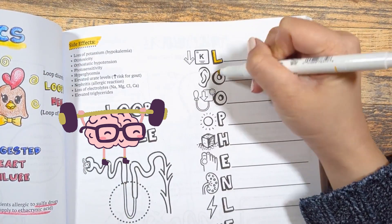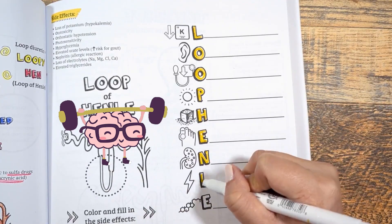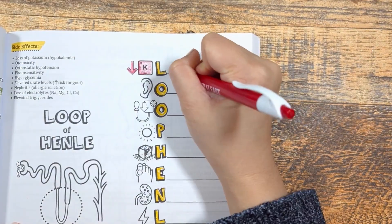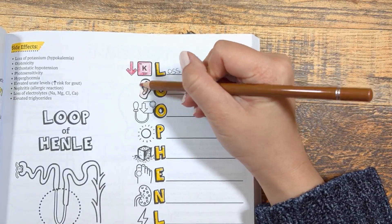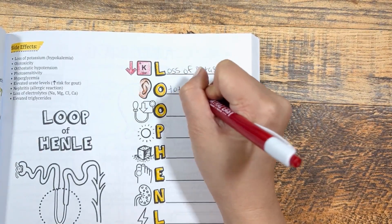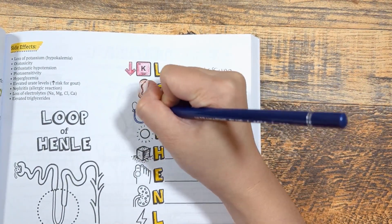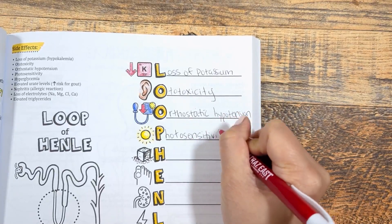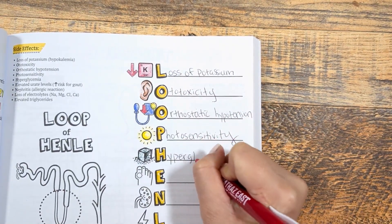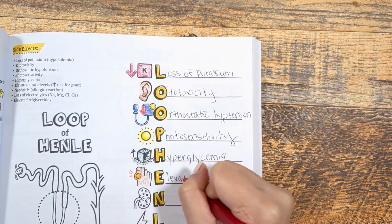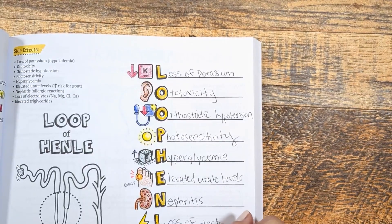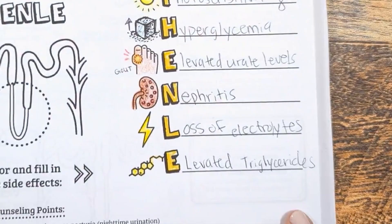Now for side effects — remember the mnemonic LOOP OF HENLE, specifically the thick ascending loop of Henle. L is for loss of potassium; patients may be prescribed potassium supplements when taking high doses. O is for ototoxicity, especially at high doses or if co-administered with other ototoxic agents. O is also for orthostatic hypotension, since we're losing fluid. P is for photosensitivity — counsel patients to use sunscreen or protective clothing outdoors. H is for hyperglycemia, as it can impair glucose metabolism leading to increased blood sugars. E is for elevated urate levels, so be cautious in patients with gout. N is for nephritis, a rare allergic reaction. L is for loss of other electrolytes besides potassium, such as sodium, magnesium, chloride, and calcium. And E is for elevated triglycerides, as LDL cholesterol and triglycerides have been shown to increase with high doses of loop diuretics.